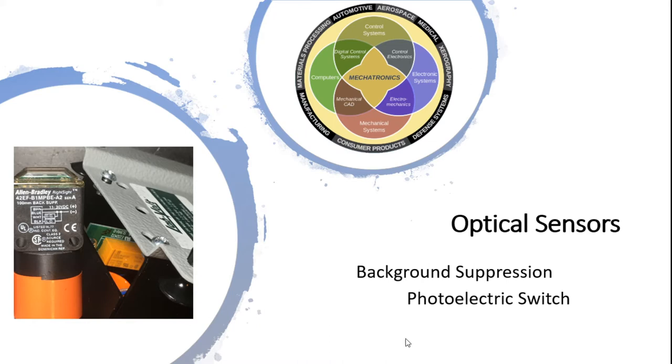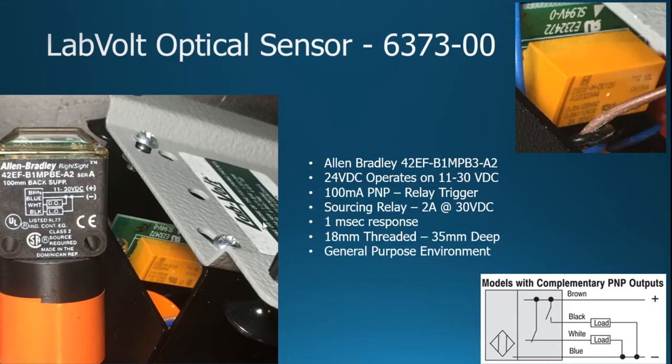This is part of our LabVolt training equipment that I'm showing you here on the bottom left hand corner. As far as a close up, what you would see is that on the end of the arm is an Allen Bradley Wright Site background suppressing photoelectric sensor. It's a 42EF-B1MPB-A2, as you can see there.